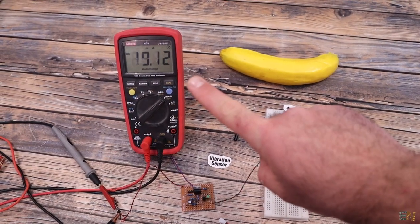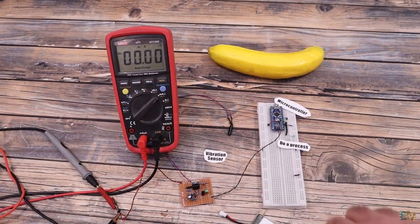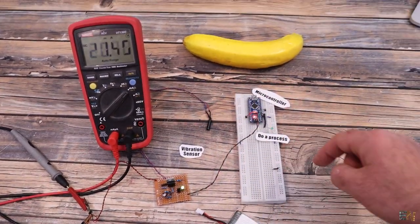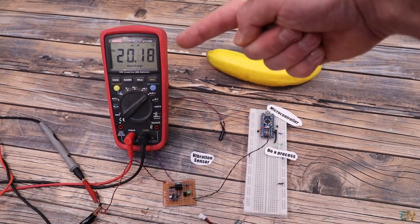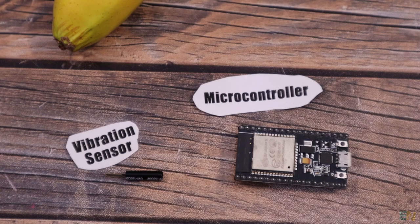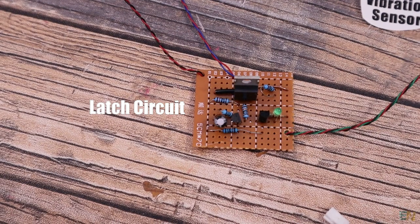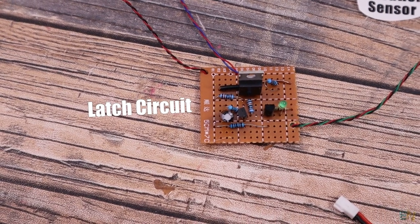I want to completely power off the system after the process is done and power up again when new input is detected. For example, I detect that somebody opened the door with a vibration sensor. For that we need to use a latch circuit. That's what I want to show you today.